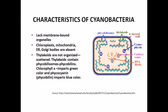Membrane-bound organelles such as chloroplast, mitochondria, endoplasmic reticulum, and Golgi bodies are all absent inside the cell. What is present inside the cell are thylakoids, which are not organized as in a chloroplast but instead are present as scattered granule-like structures inside the cell.